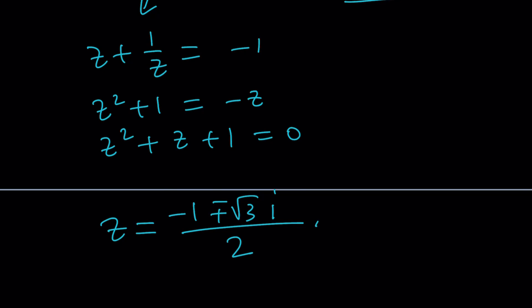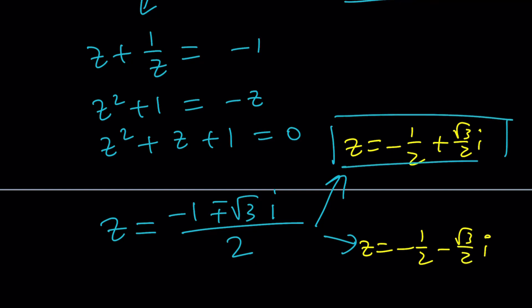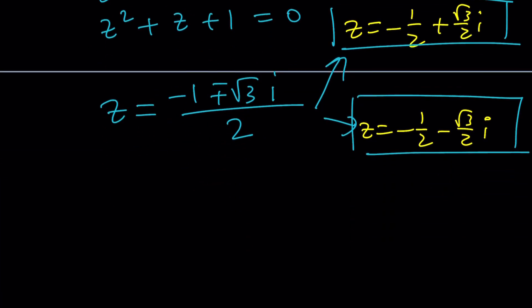Wait a minute. These numbers look familiar, don't they? Well, if you write them separately, hopefully that will make more sense. One of them is -1/2 + √3/2 i. And the other one is -1/2 - √3/2 i. Are you thinking trigonometry? If you are, then you're on the right path. And yes, these numbers are the cube roots of 1. Cube roots of 1.